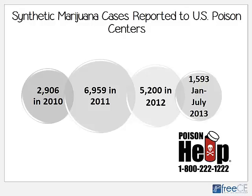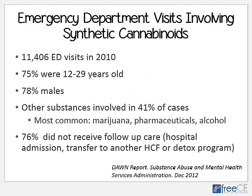We hope that everyone does call a poison center if confronted with a case of toxicity, but we know that doesn't always happen. It still is being used out there, and we could see an increase as other chemicals are developed. The Drug Abuse Warning Network reported 11,406 emergency department visits due to synthetic cannabinoids in 2010. Seventy-five percent were in the 12- to 29-year-old age group, 78% were males, in 41% other substances were also used — most commonly marijuana, pharmaceuticals, and alcohol — and in 76% of cases there was no follow-up care or hospital admission.